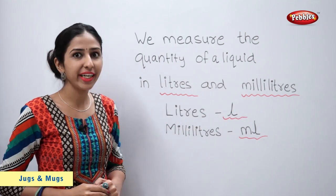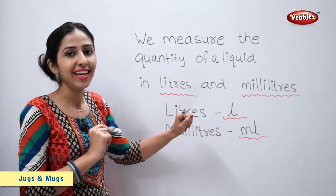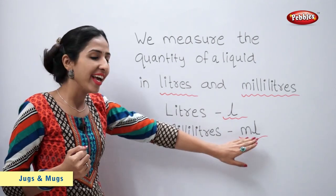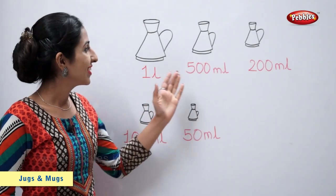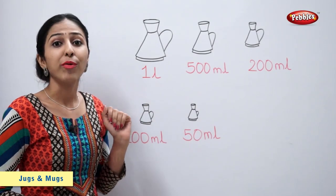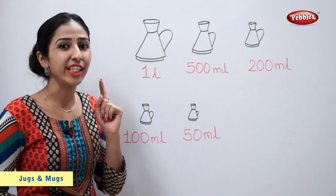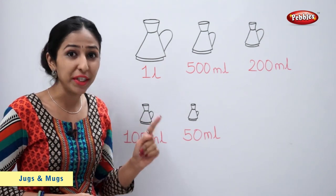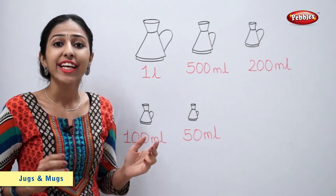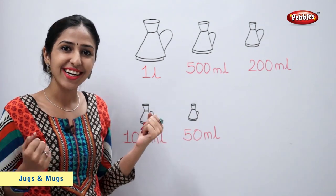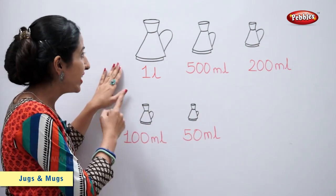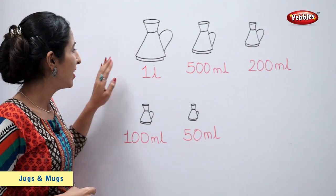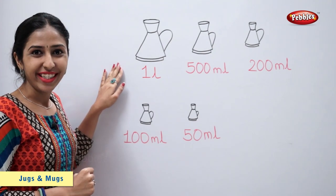Litres are denoted by L and millilitres are denoted by ml. These types of vessels are generally used to measure liquids like petrol, oil, kerosene etc. This vessel when completely filled holds 1 litre of liquid.